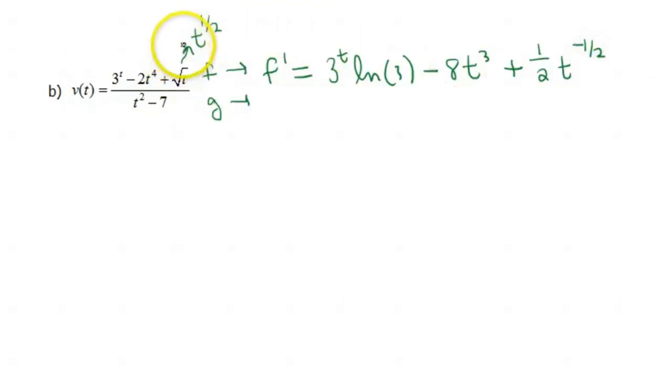Okay, then g, the derivative, or the denominator here, that's t^2 minus 7. That derivative is just 2t. Because we bring the 2 down front and then reduce that power by 1, that gives us a 1 technically. And then minus 7, that drops out because of the fact that it's a constant. So that one goes away.